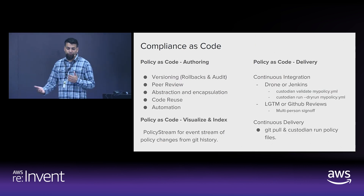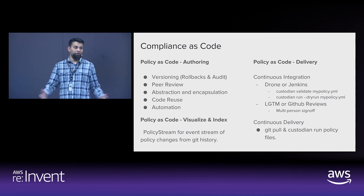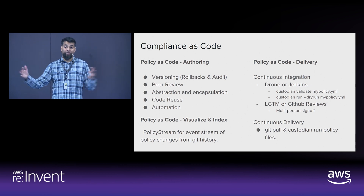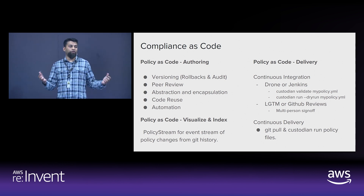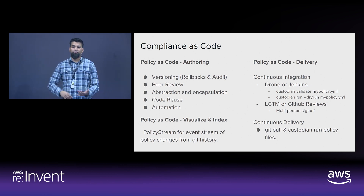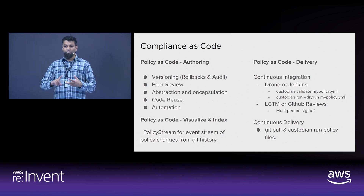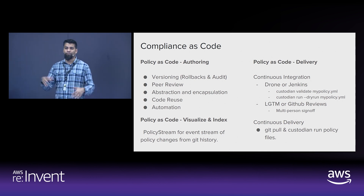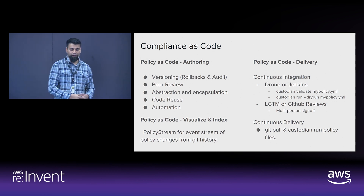At the end of the day, this is all targeted toward compliance as code. Infrastructure as code is a thing, and compliance as code is also a thing. The as-code value gives you automatic auditing, versioning, rollback, and code review — all those good things are part of the value outcomes we try to achieve with Custodian.